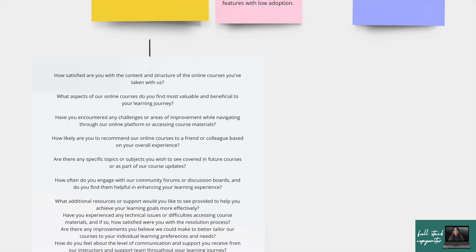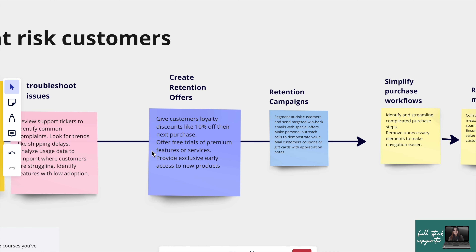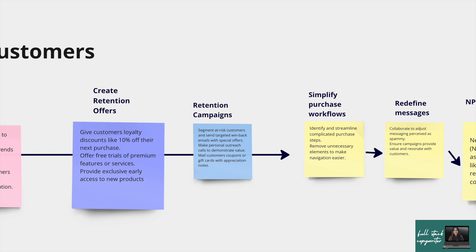For example, one of my survey questions is: 'How satisfied are you with the content and structure of the online courses you have taken with us?' I create courses, so that's my question. If you're in a food business with a cloud kitchen, your set of questions will be different. If you're unsure, go to ChatGPT — it won't take long. Then troubleshoot the issues from the survey responses: list what problems customers are reporting, like late delivery or poor navigation, and refine your product or service accordingly.